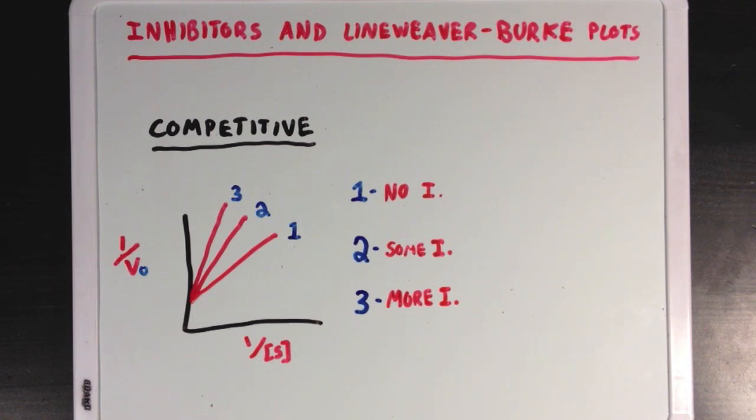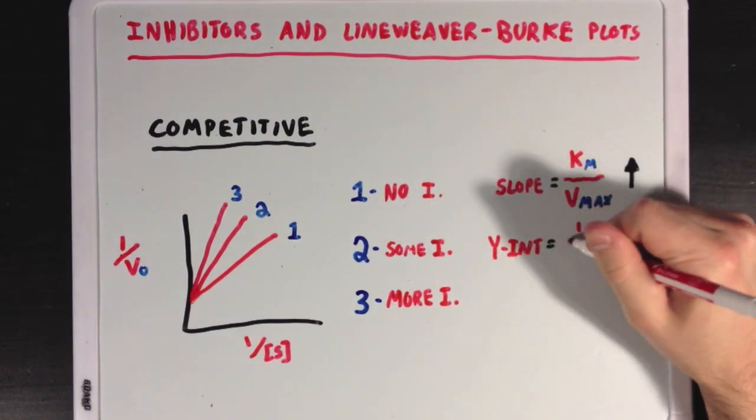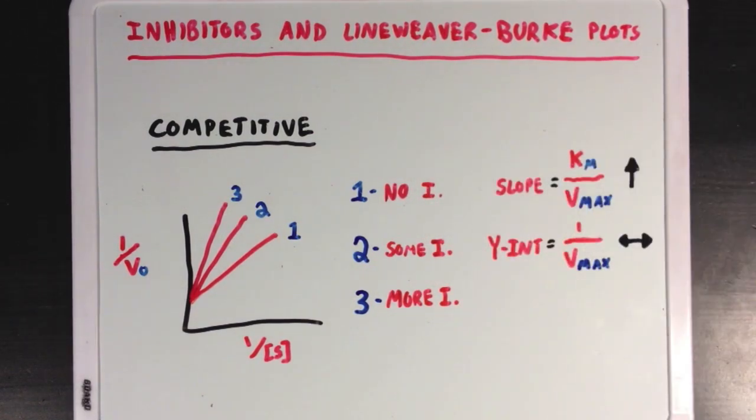So as you can see, as you increase the amount of inhibitor blocking the enzyme, the slope of these lines is increasing, while the y-intercept isn't changing at all. What this means is that as you increase the concentration of an inhibitor, you're going to see an apparent increase in Km. Remember that Km is a constant, so it's only an apparent change. And that's due to the increase in the slope of the line.